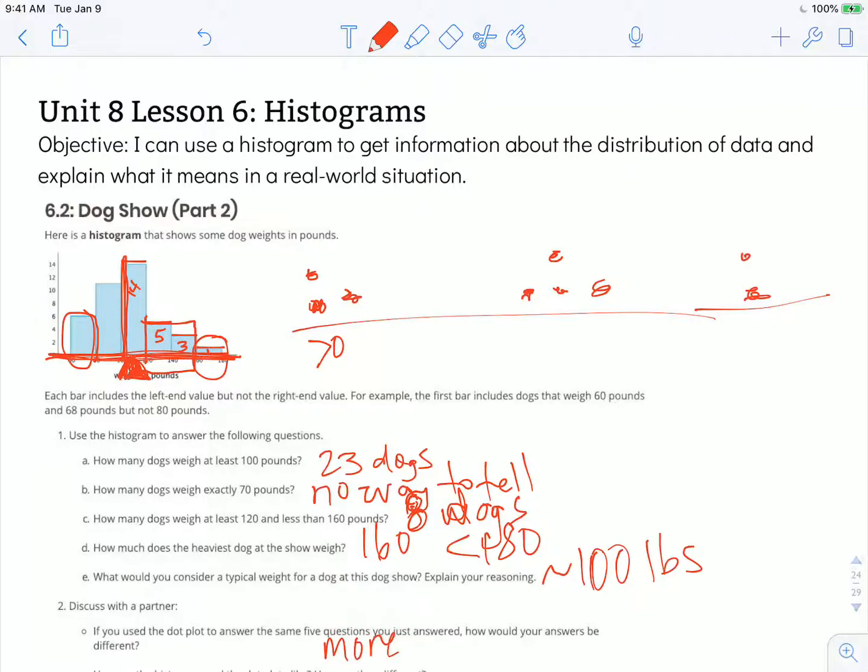So I'm going to write that, more precision in our responses, because we might be able to tell exactly how many dogs weighed 70 pounds. And maybe it's two, maybe it's zero, maybe it's all six in that particular band of weights.